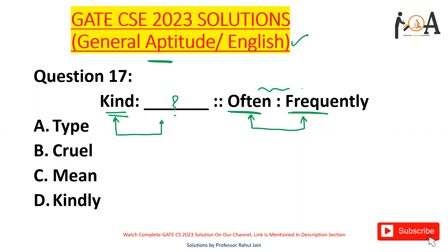Both 'often' and 'frequently' are adverbs and both are used for the same meaning — how often you do this, how frequently you do this — likewise that.